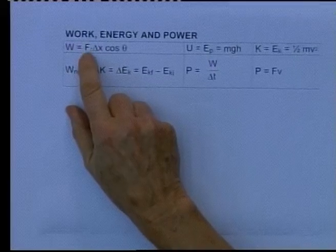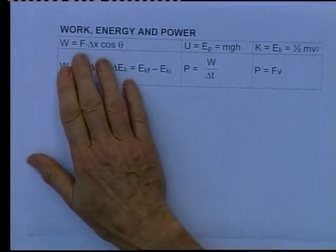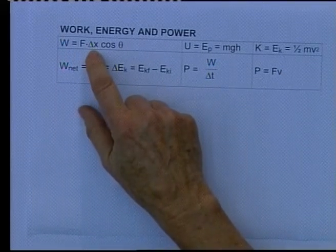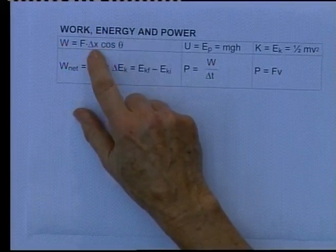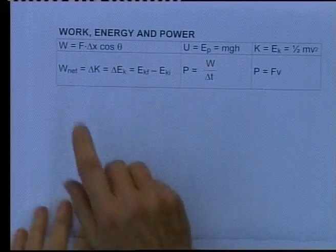The next thing we need to know about, looking again at our equation, is delta x. We have now dealt with force and the different kinds of forces that might give us trouble, but now let's look at delta x. Delta x is displacement, and normally that doesn't give us a lot of trouble because the displacement is normally specified.